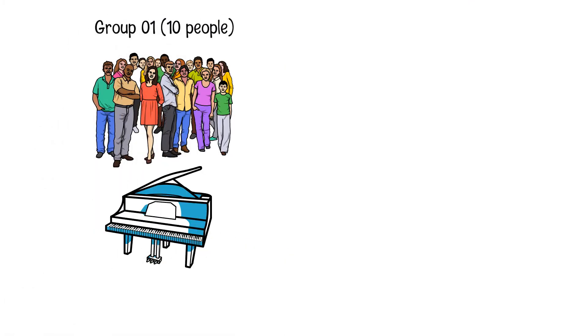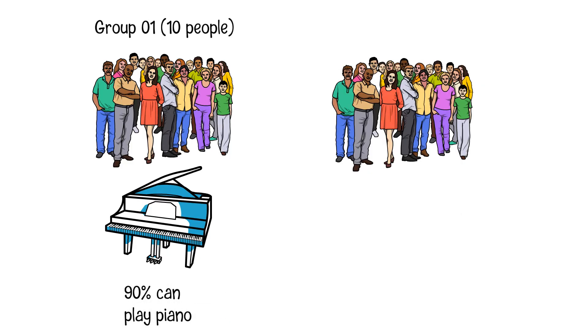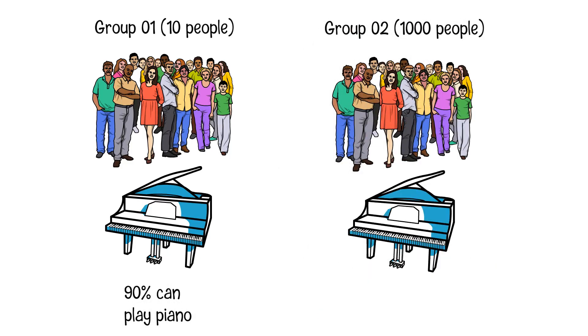For example, there are two groups of people. There are 10 people in the first group and 90% of them can play piano. There are 1,000 people in the second group and only 10% of those people can play piano.